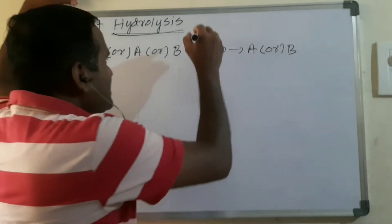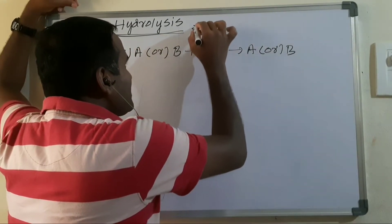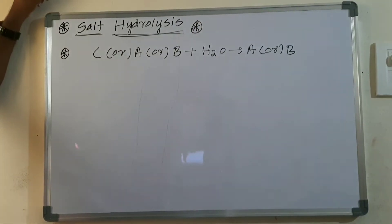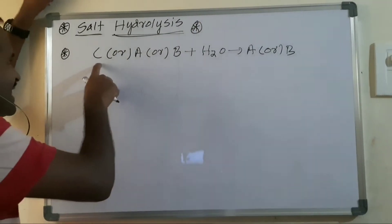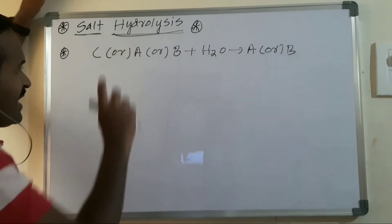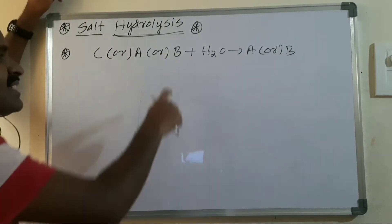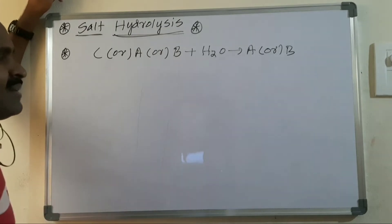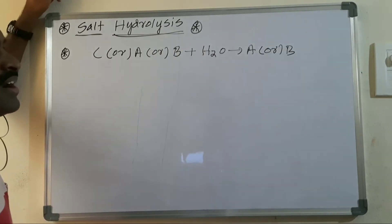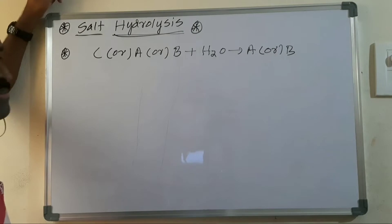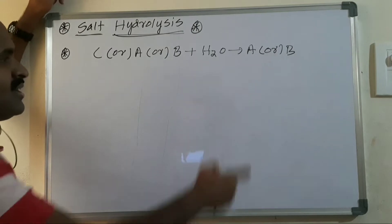The basic definition is that salt hydrolysis is simply the reverse of a neutralization reaction. When the cation or anion of a salt — or both ions — react with water, it produces an acidic or basic solution.